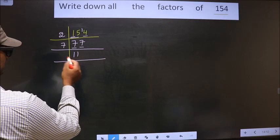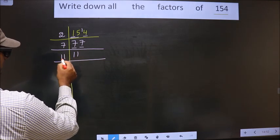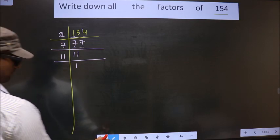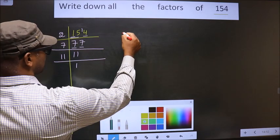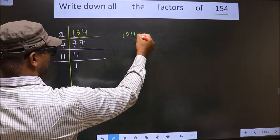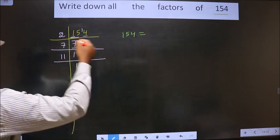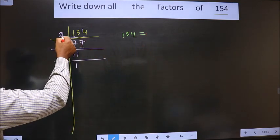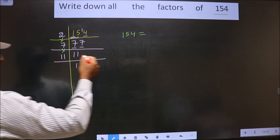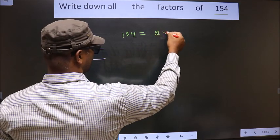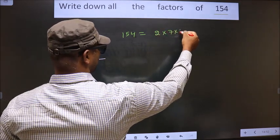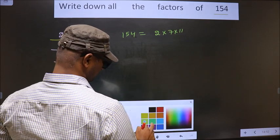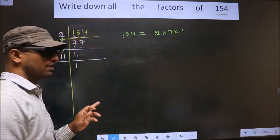Now, here we have 11. 11 is a prime number. So we take 11. 11 ones 11. So now, 154 is equal to the product of these numbers. That is 2 into 7 into 11.